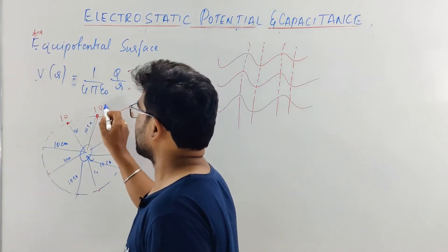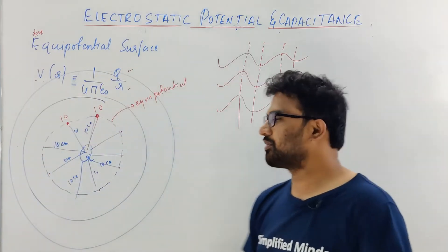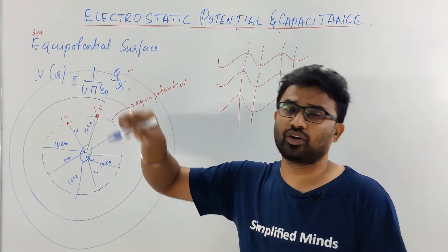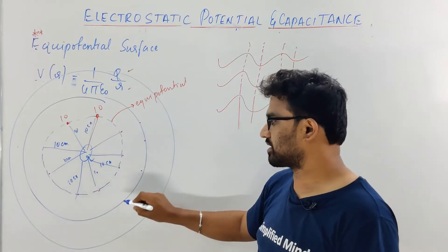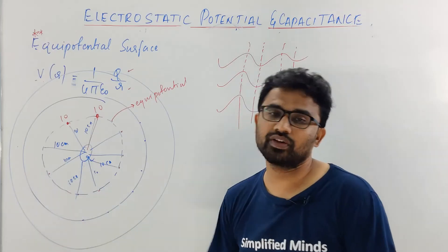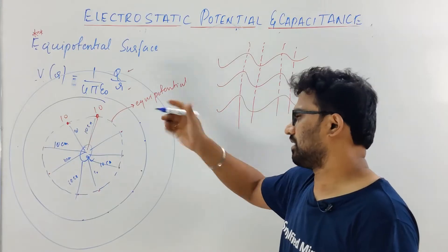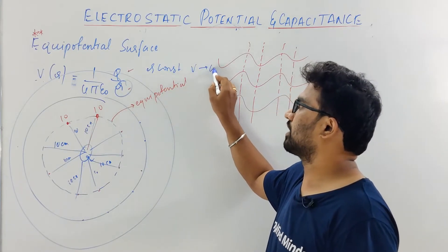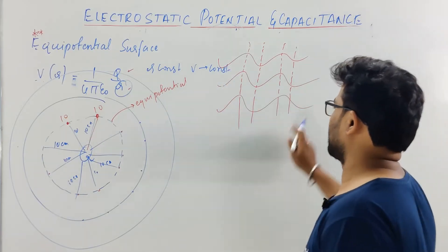So if you draw many equipotential lines, for a given point charge you have equipotential surfaces as circles — concentric circles. Because at every point, R is constant, distance is constant, therefore the potential is constant. The difference between any two of these will always be zero. If R is constant, V also remains constant for a given Q and given epsilon-naught.